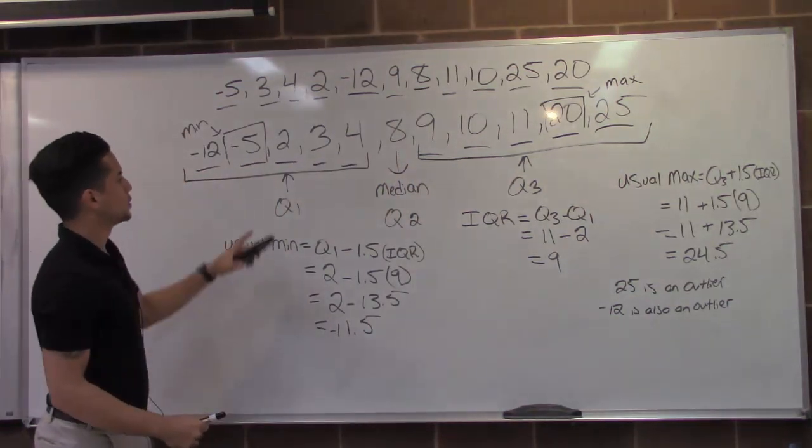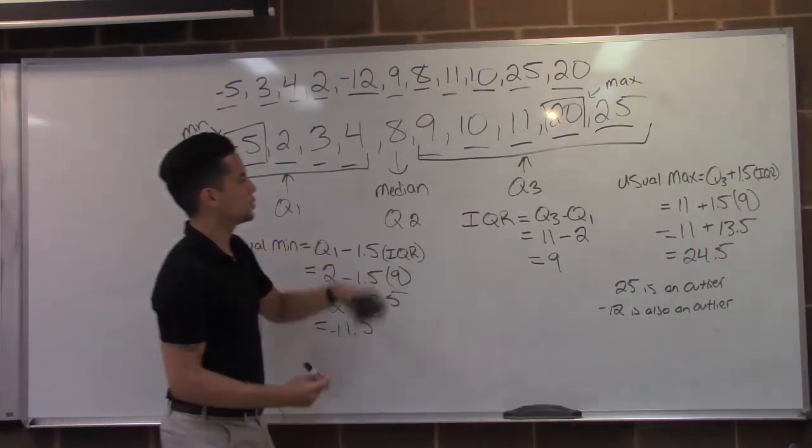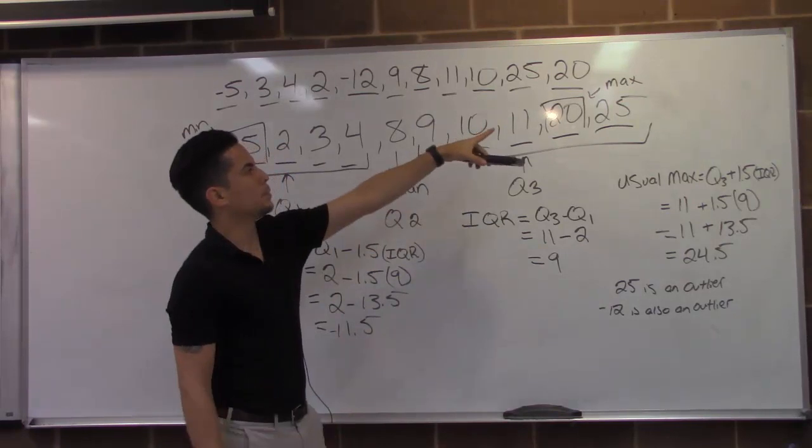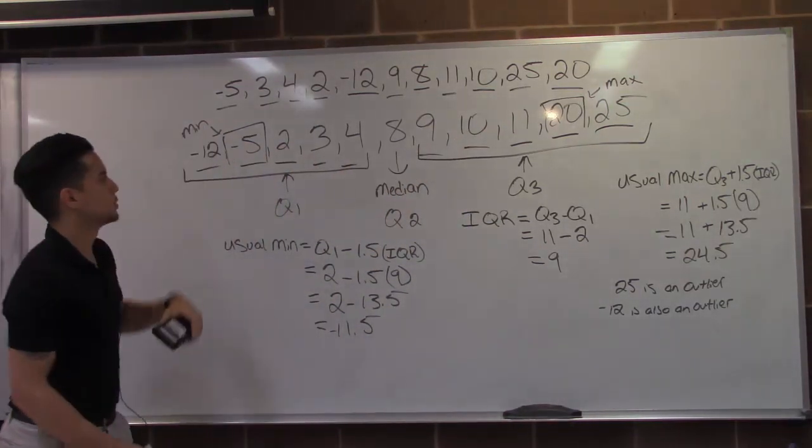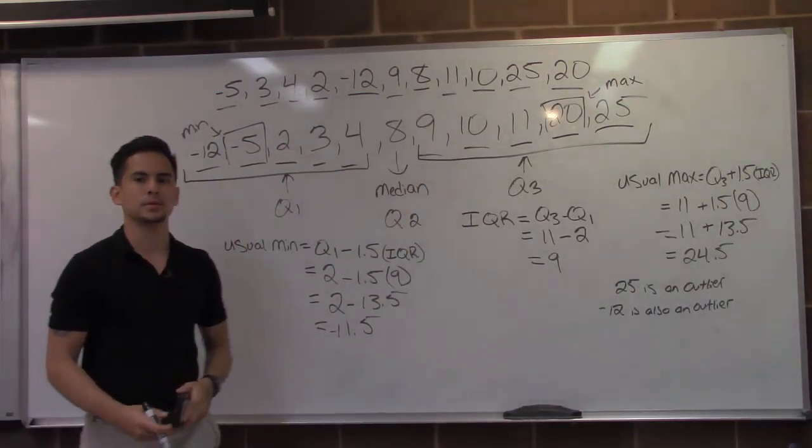So we found Q1, Q2, Q3, our minimum, and maximum, which makes the five number summary.